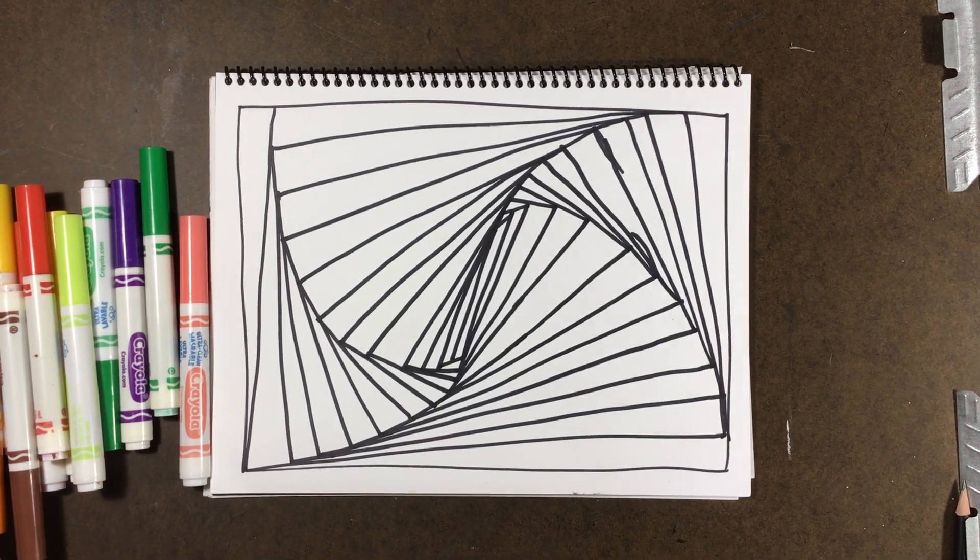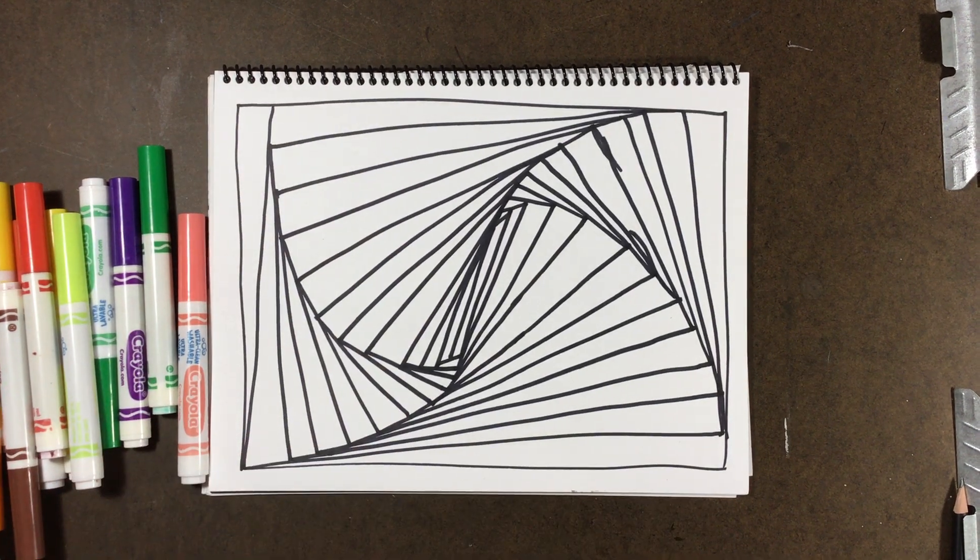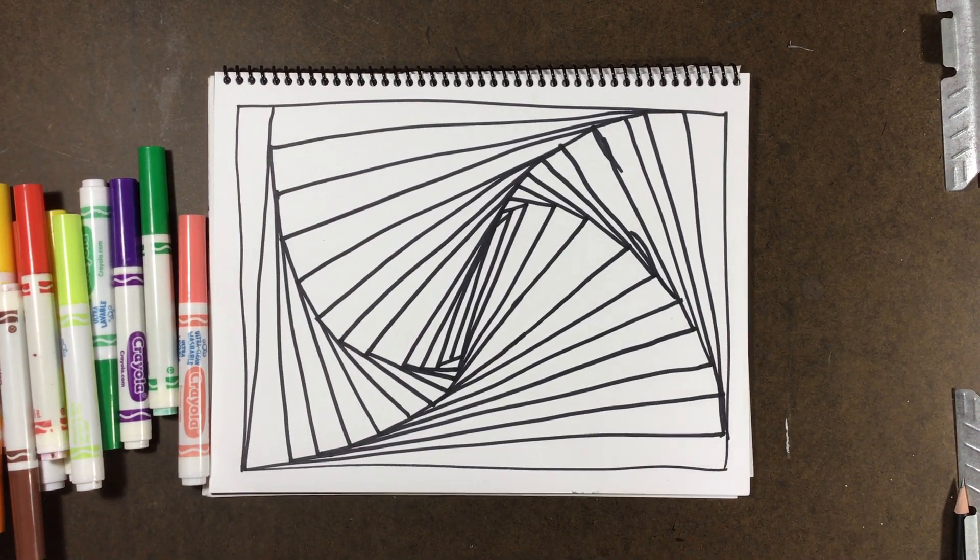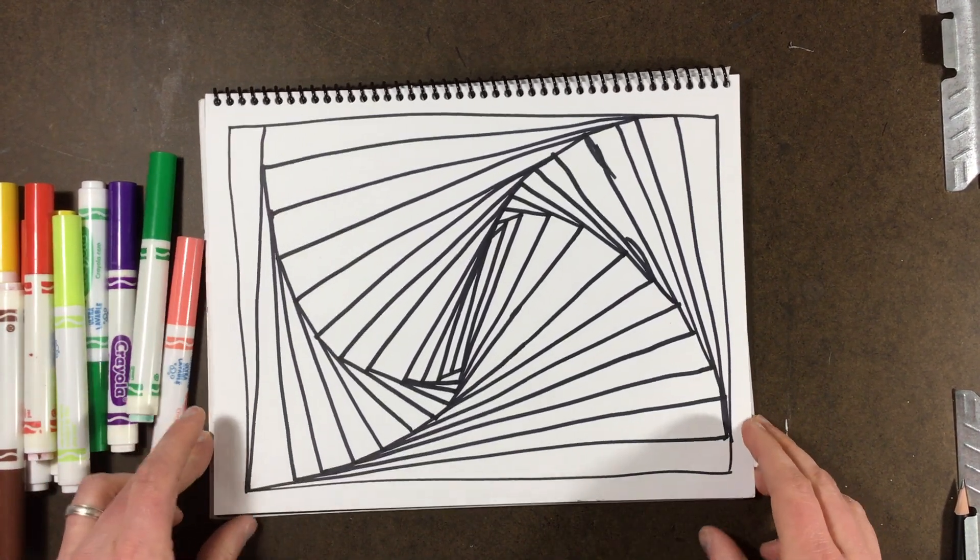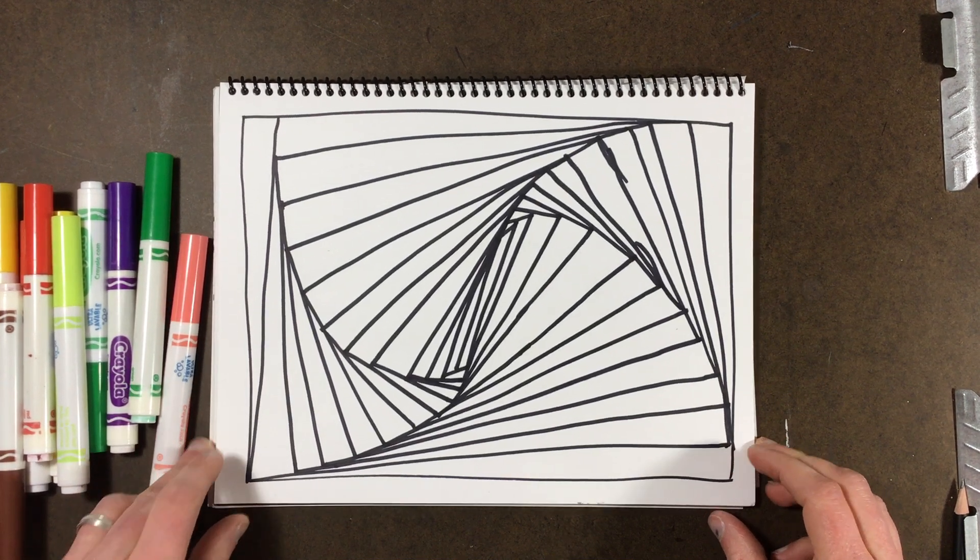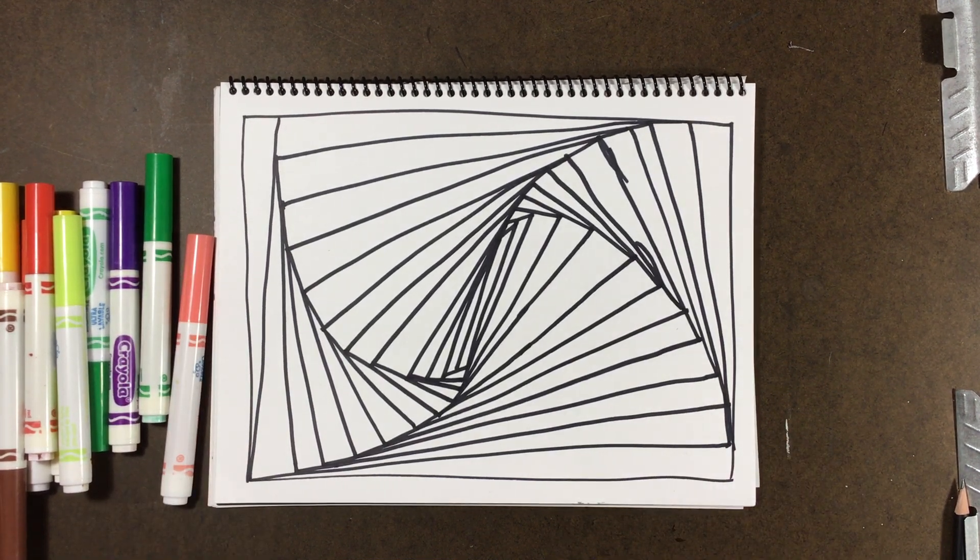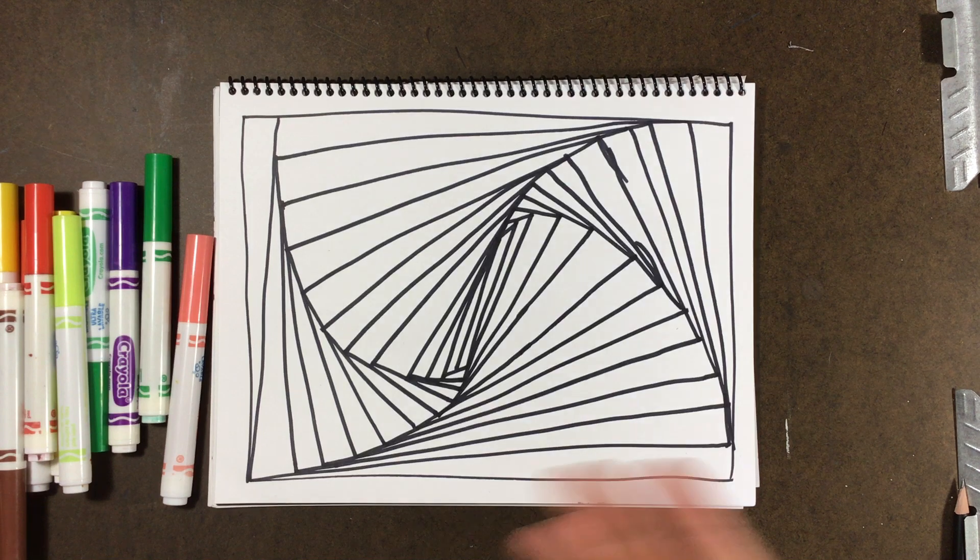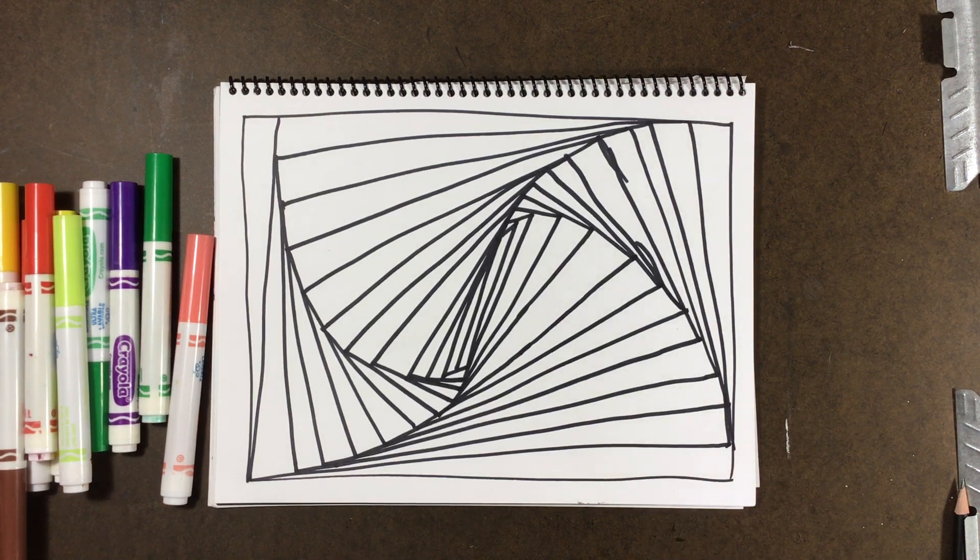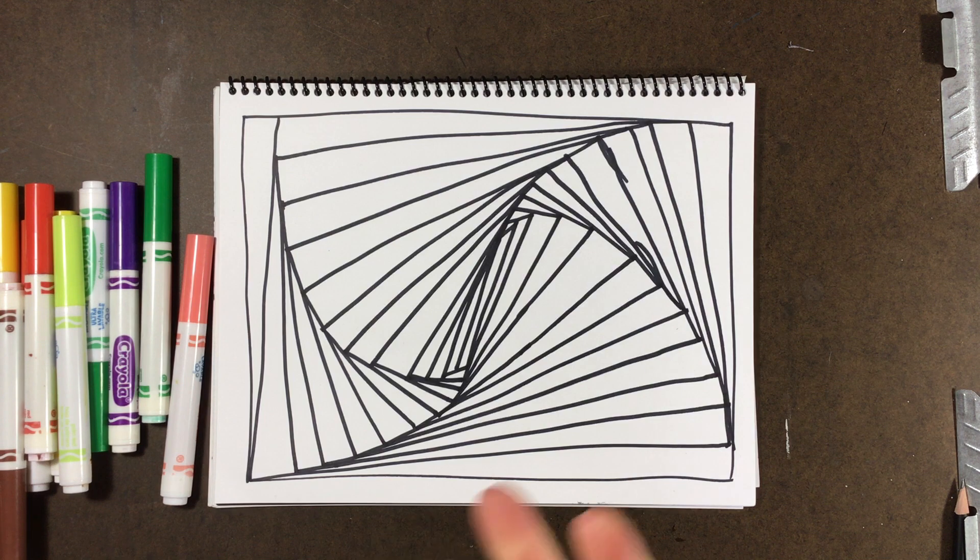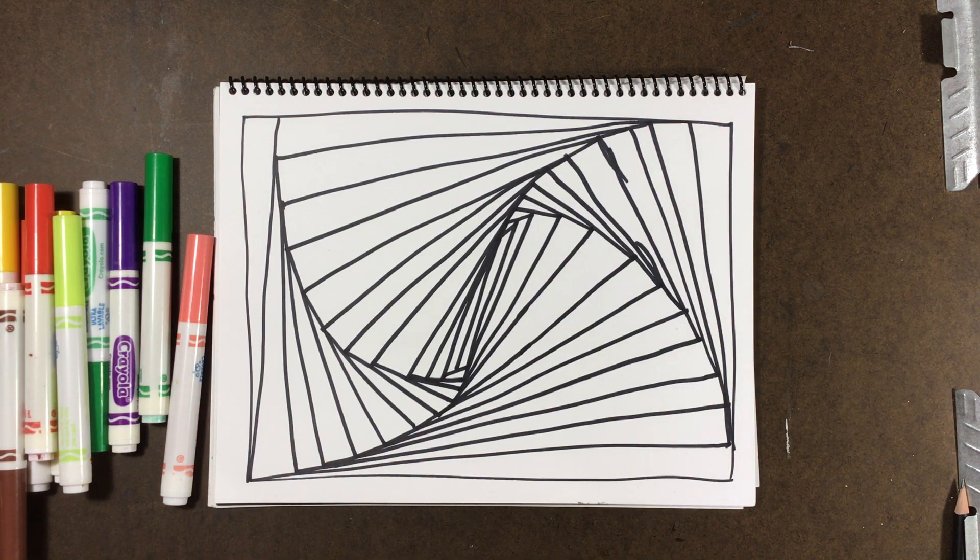Alright students, welcome back. Now let's talk about coloring this in. We're going to pick complementary colors for this. Remember, complementary colors are sets of colors across from each other on the color wheel. So red and green, yellow and purple, or blue and orange are the three main sets of complementary colors.